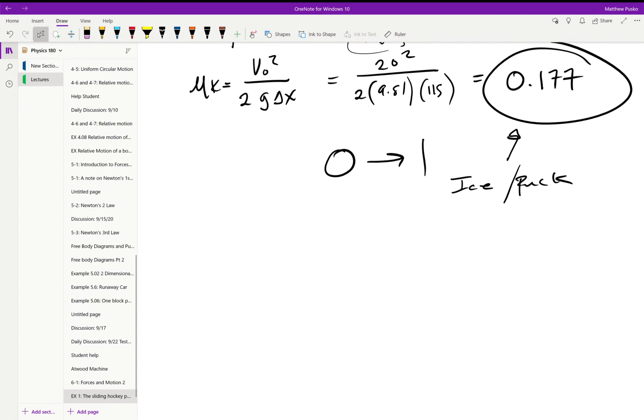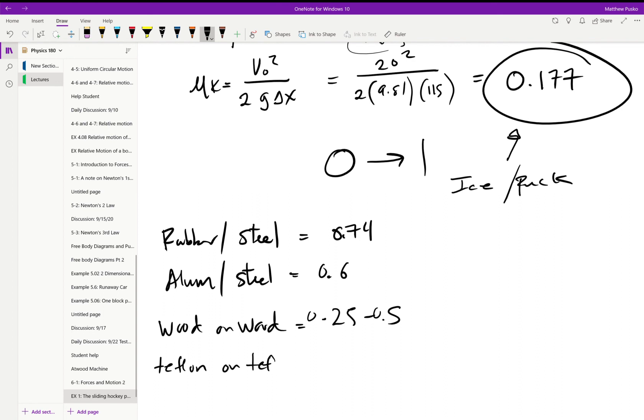Rubber on steel, maybe like a belt going around a steel pulley in your vehicle, has a 0.74 range. Aluminum on steel, that's about 0.6. Wood on wood is around the 0.25 to 0.5 range, so it's got a decent range, depends on the wood, right? Depends on how rough it is.